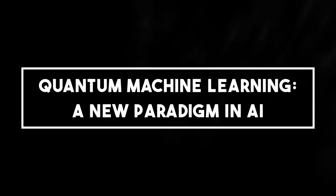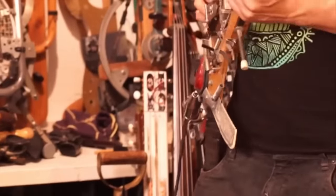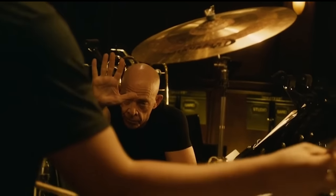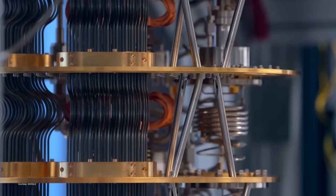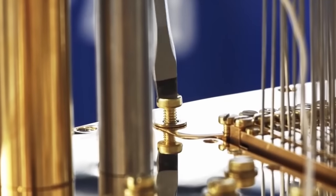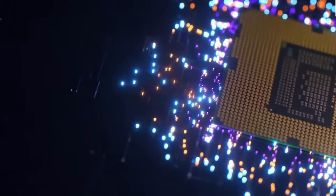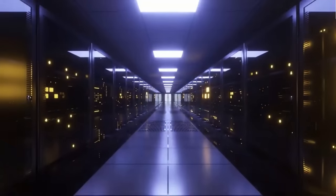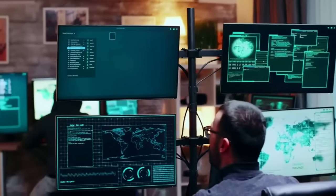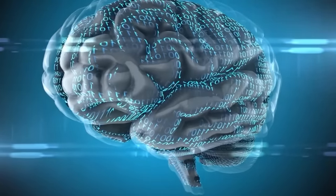Quantum machine learning: a new paradigm in AI. Imagine you're a musician, and you've been gifted a brand new instrument — one that's so unique, it could potentially revolutionize music. But there's a catch: you need to learn how to play it. That's the situation we're in today with quantum computing. We have this powerful new tool, but we're still figuring out how to use it effectively. And that's where quantum machine learning, or QML, comes in. QML is like the maestro that knows exactly how to play this new instrument, producing symphonies of solutions that were previously impossible. Traditional machine learning is limited by the computational resources of classical computers, but QML leverages the superposition and entanglement of quantum mechanics to process vast amounts of information simultaneously.